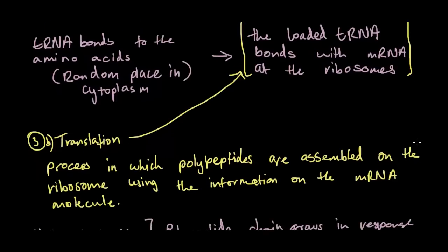So the formal definition for translation is that it's the process in which polypeptides are assembled on the ribosome using the information on the mRNA molecule. Let's get it a little bit clear here. The mRNA is basically telling the tRNA what type of amino acid needs to be coded next through the nitrogen bases. And through this, it can create a polypeptide chain to create a specific protein. So every DNA molecule, or every RNA molecule, every mRNA molecule, I mean, it creates a different type of protein depending on what's actually coded inside it.